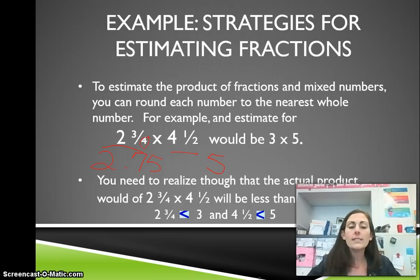Now, you need to realize though that the actual product of 2 and 3 fourths times 4 and 1 half would be less than 15. Why? Because 2 and 3 fourths is less than 3. It's 2.75. And 4 and 1 half is less than 5.